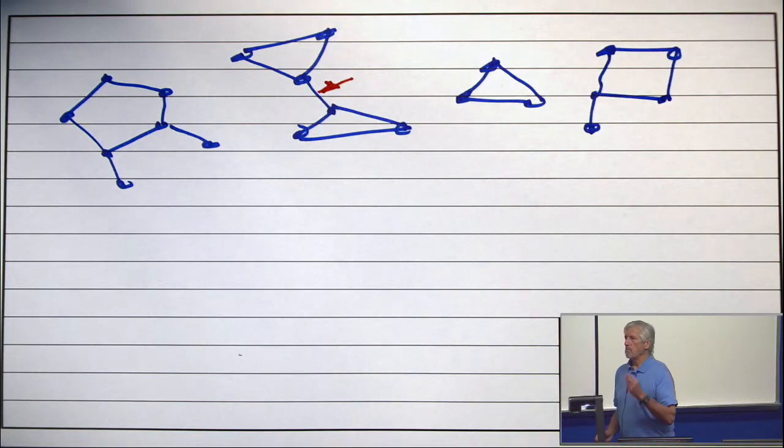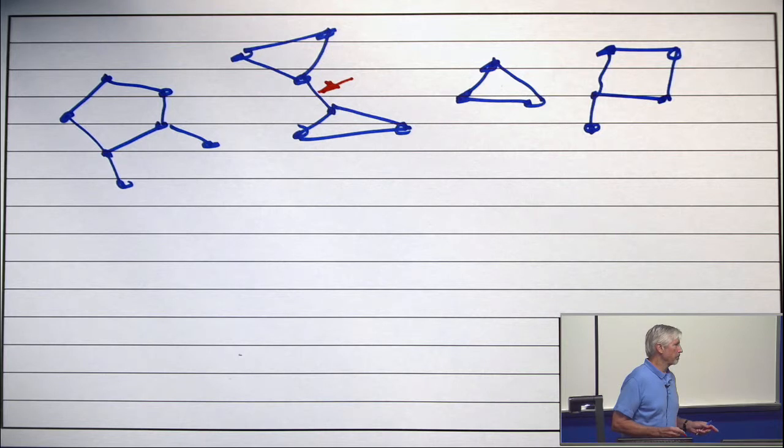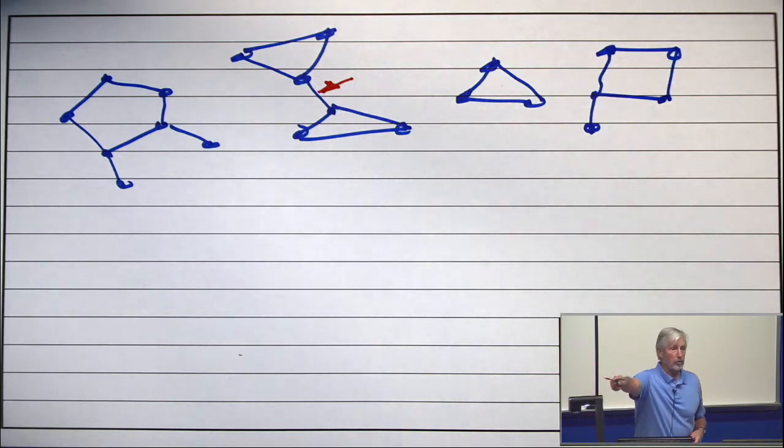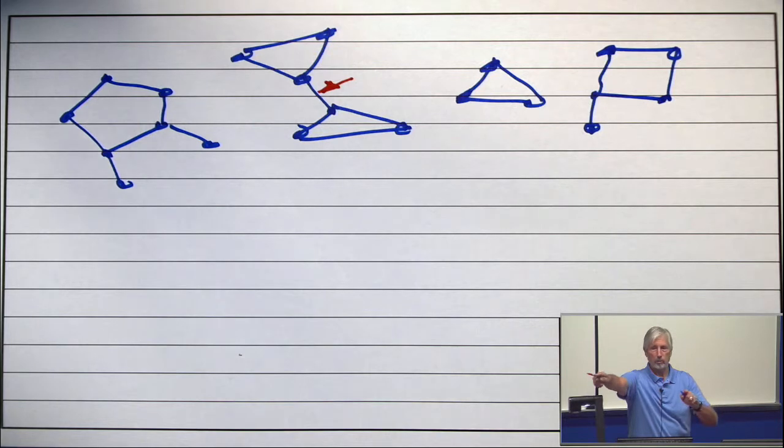Now, remove that bridge. And when you do, the number of vertices stays the same. The number of edges goes down by one. And what happens to the number of faces? Somebody over here said it goes down by one. Somebody here said it stays the same. But it stays the same.